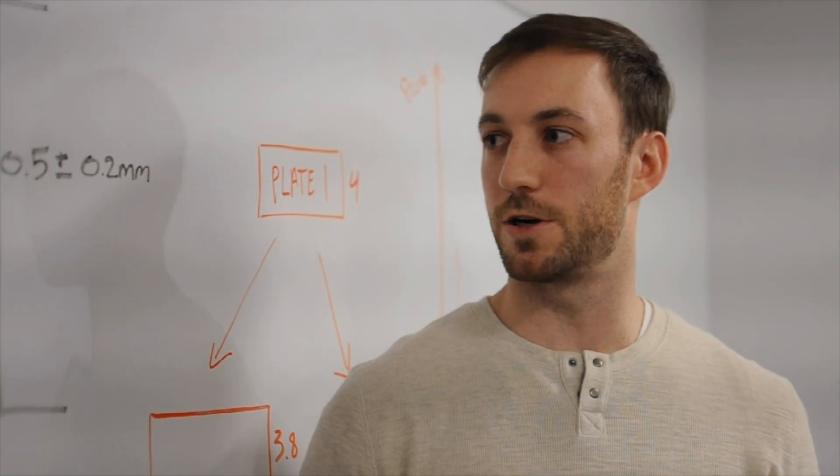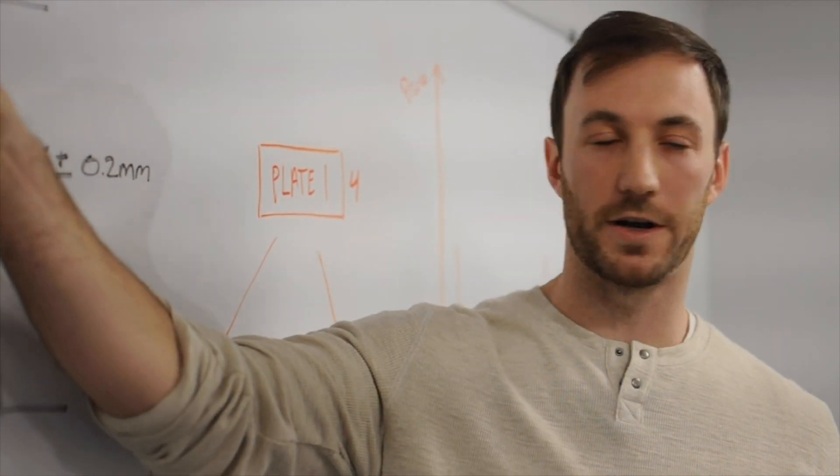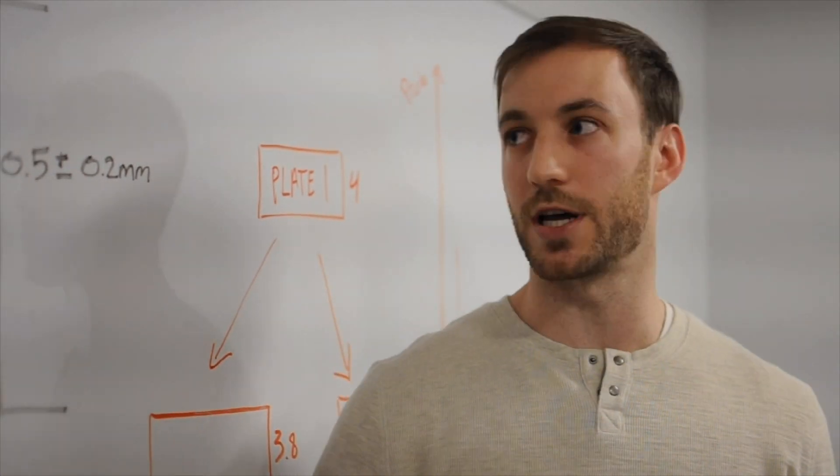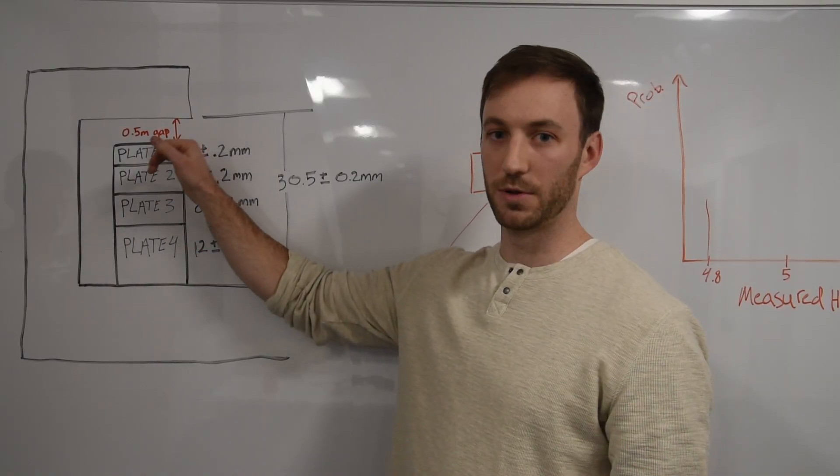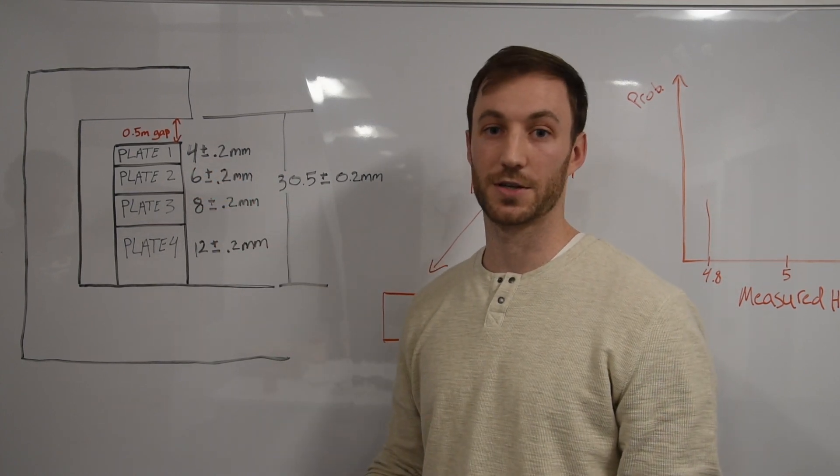So the question is, is there an instance or scenario where these plates will interfere with the ceiling? And at first glance, you say no, because you have a half millimeter gap here, but we need to look at the tolerances of each element and plate to ensure that's correct.